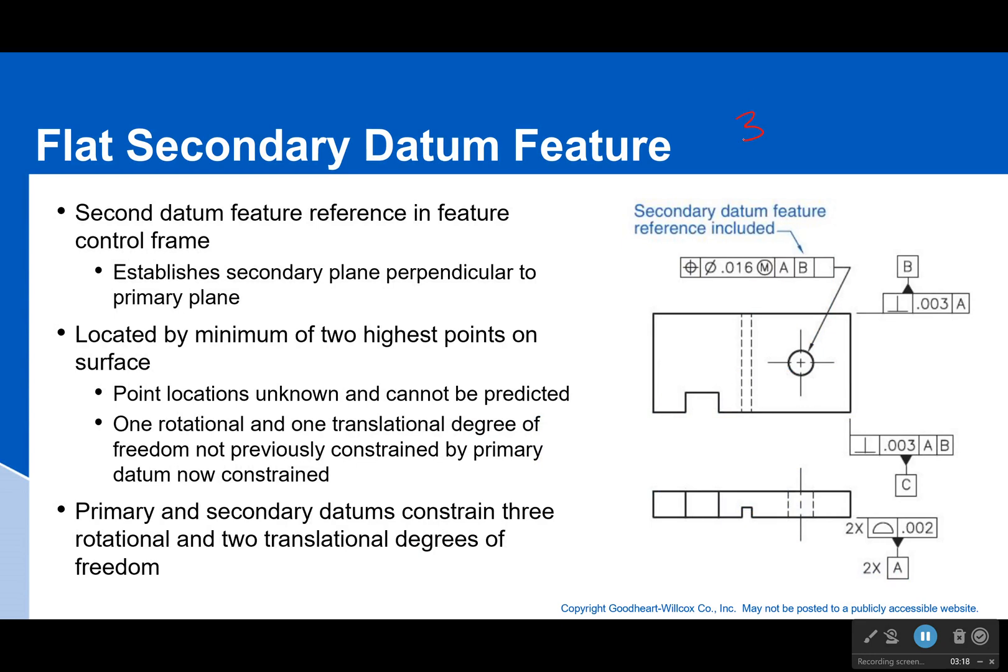Okay. Now we're down to our second datum feature. It goes in the second box. And this would be B in this case. Now it's going to establish a plane that's perpendicular to our primary plane. And just like the last one, it can be located by a minimum of two highest points on the surface. Don't know where those are. But what will it get rid of? It gets rid of one rotational and one translational degree of freedom.